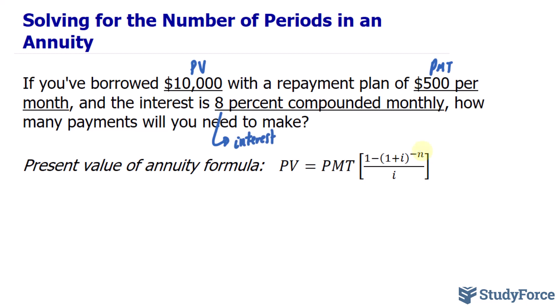Before we start solving for n, I just want to point out that the interest rate, which is compounded monthly, corresponds with the cash flow, which is monthly. Now, if that weren't the case, you would have to modify the 8% interest rate so that it matches the cash flow. But in this case, it's the same.